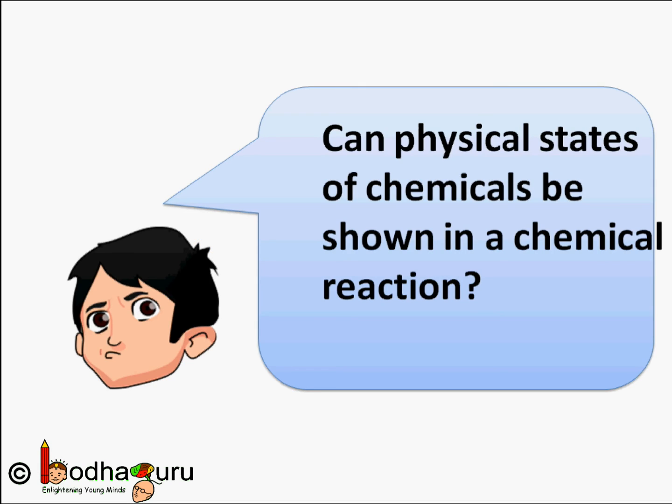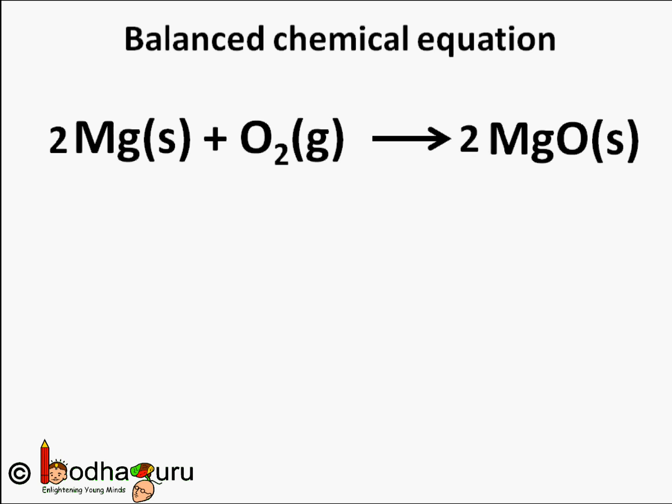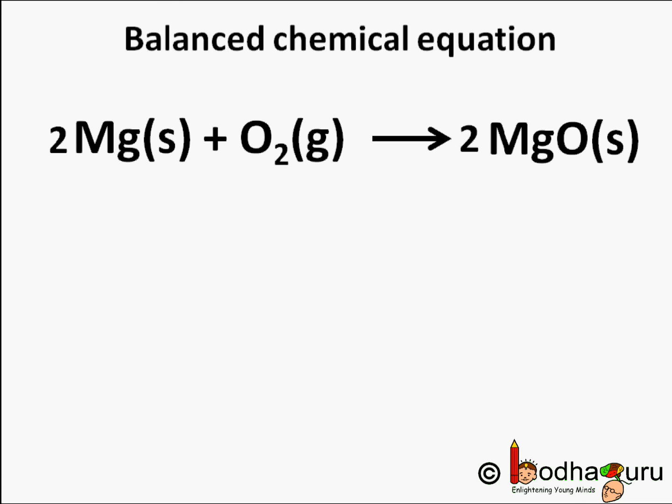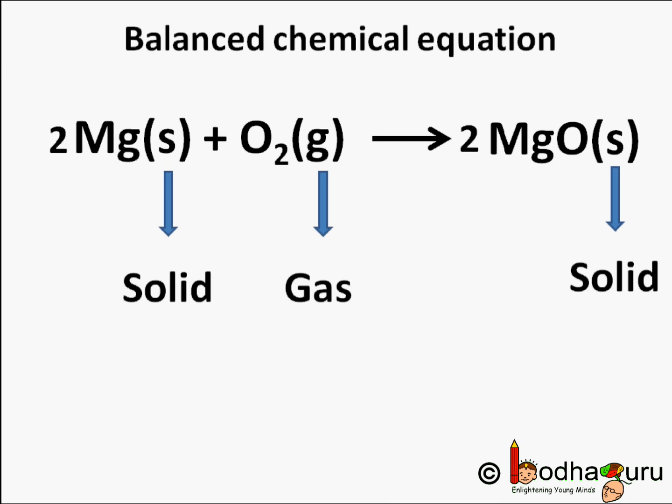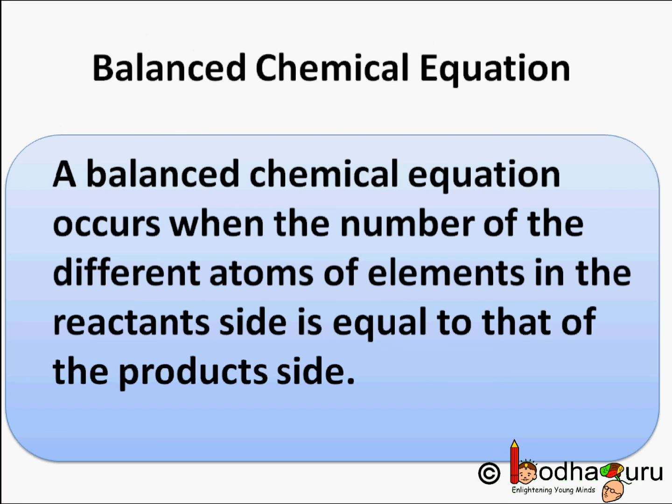You may wonder — can the physical states of chemicals be shown in a chemical equation? Yes, it is very much possible. We can write the physical states of reactants as well as products, such as whether it is solid, liquid, gas, or aqueous form — that is, dissolved by adding water as a solvent. This can be shown by writing (s) for solid, (g) for gas, (l) for liquid, and (aq) for aqueous form, written in brackets beside the chemicals.